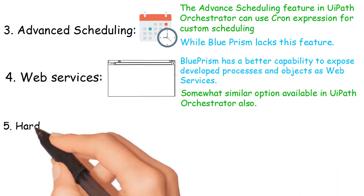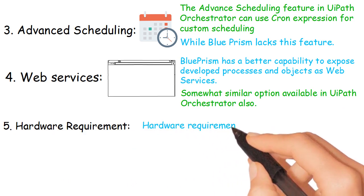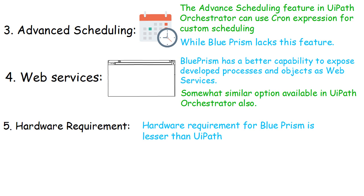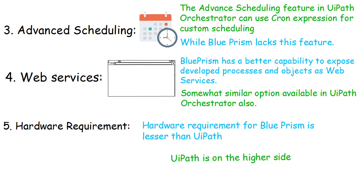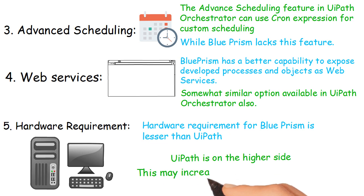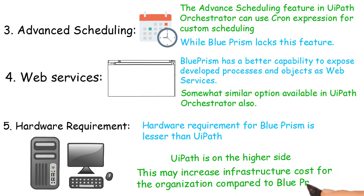Number 5: Hardware Requirement. Hardware requirements for Blue Prism are lesser than UiPath. UiPath is on the higher side, requiring more CPU, RAM, and SSD on both the client and server side. This may increase infrastructure costs for the organization compared to Blue Prism.